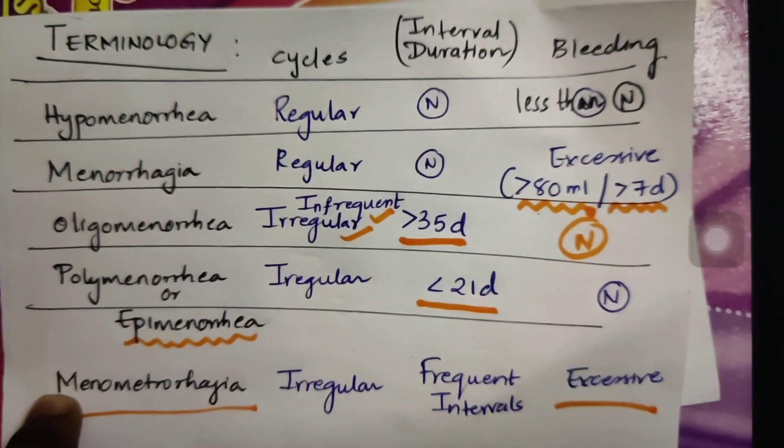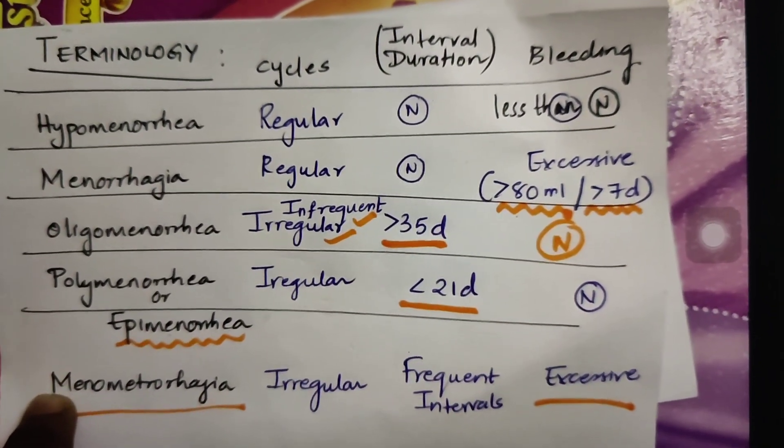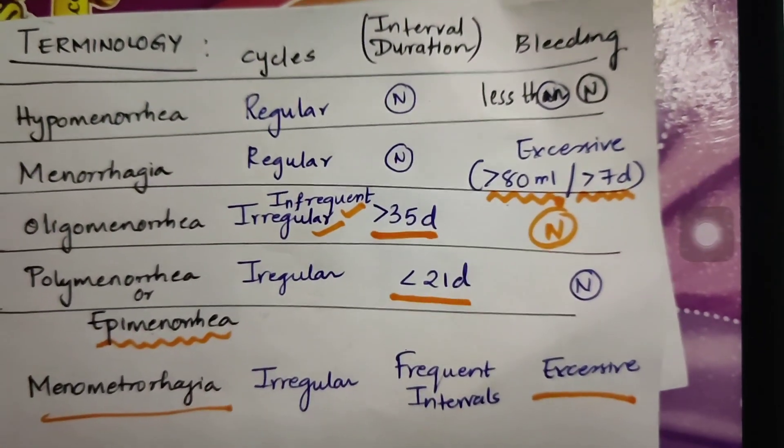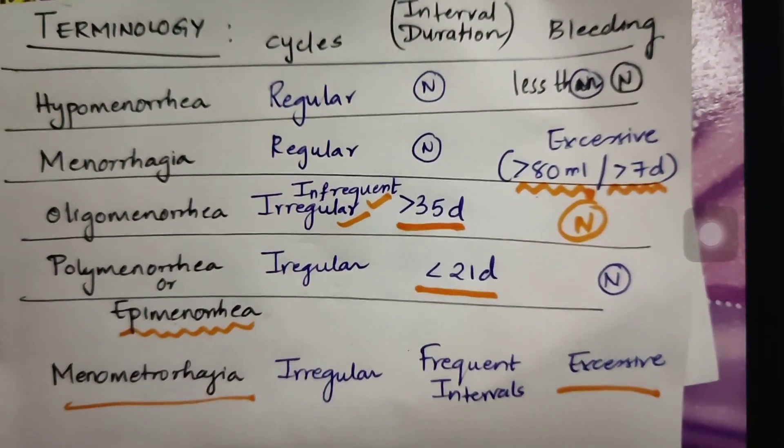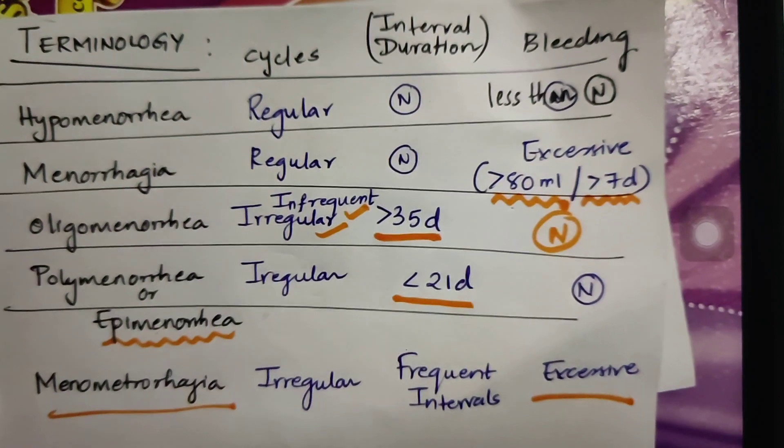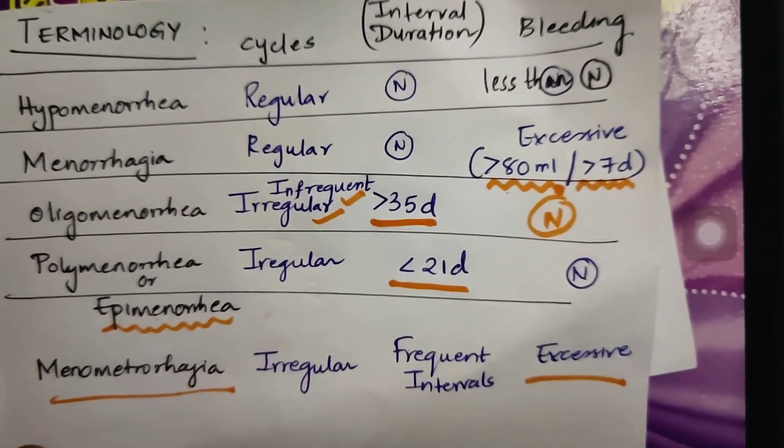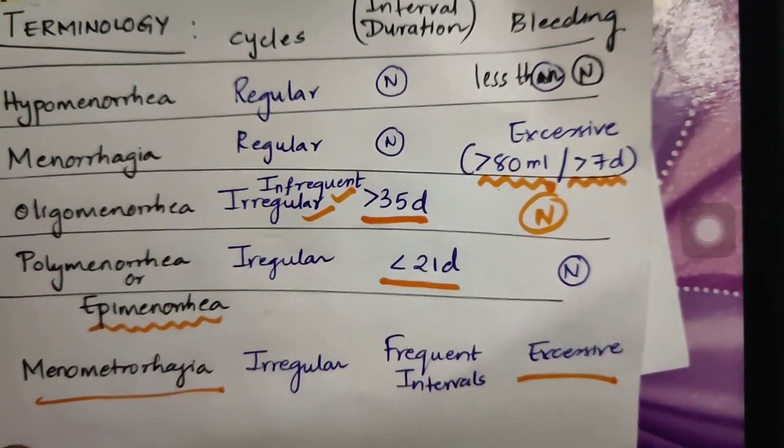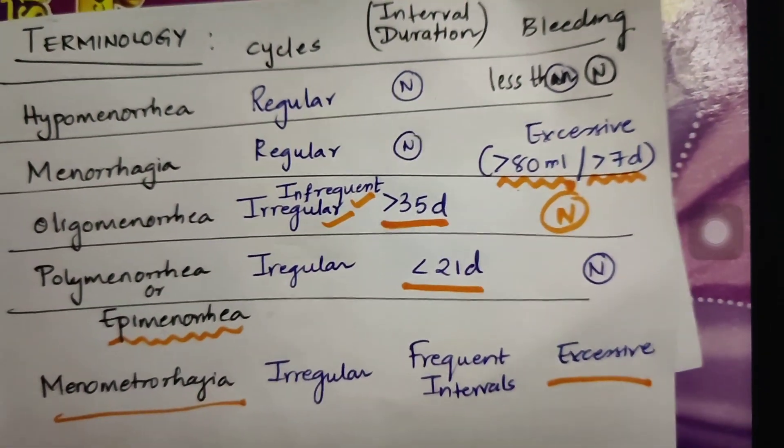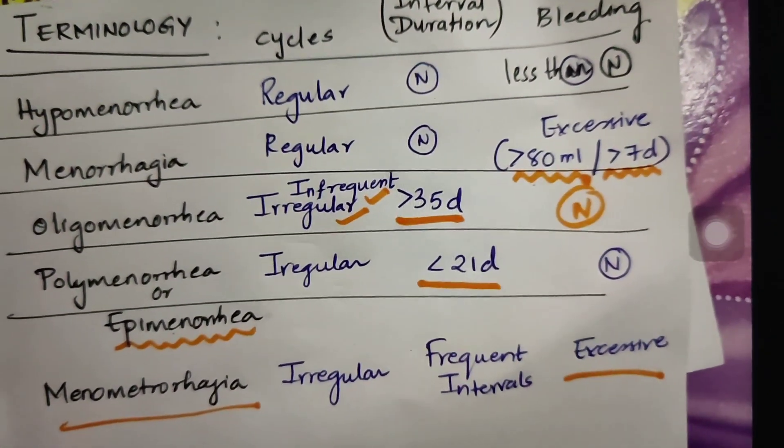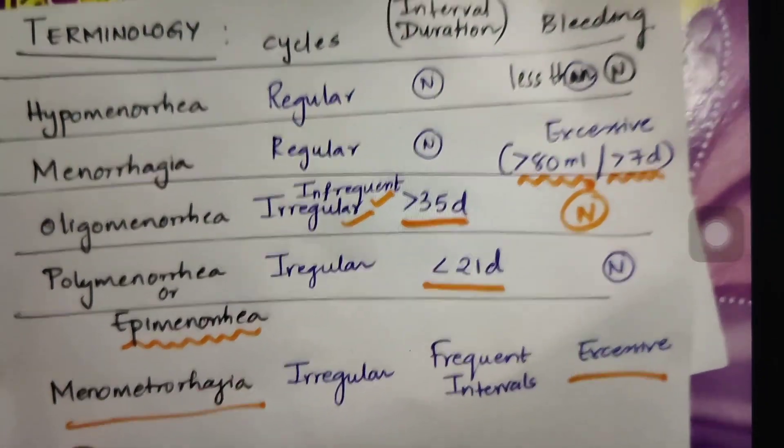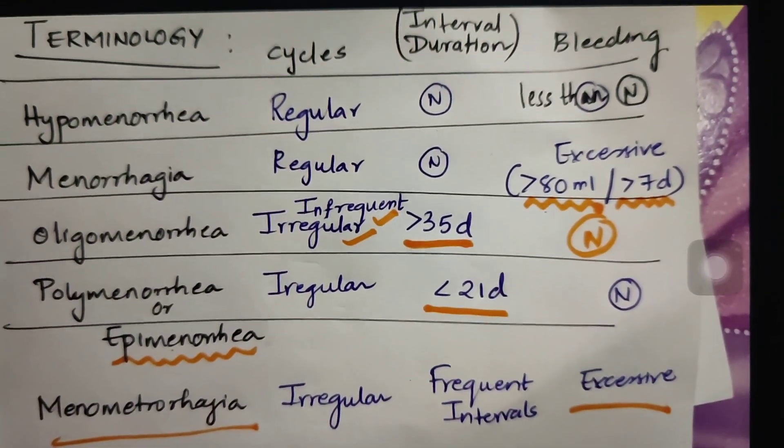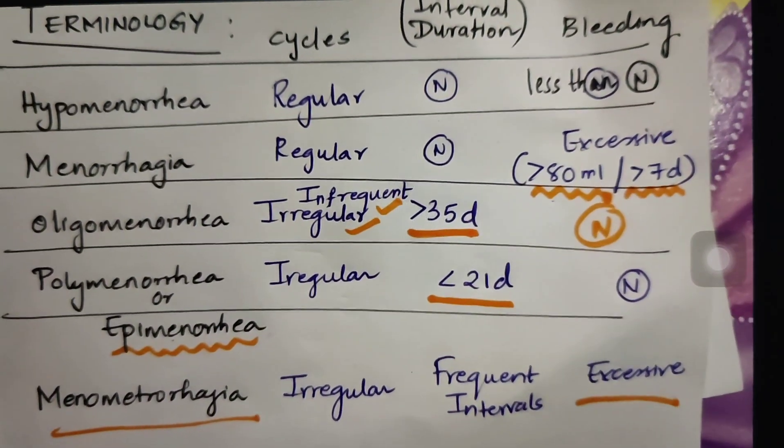Coming to hypomenorrhea, the cycles are regular here and the duration or interval between two cycles is also normal, but the problem is with the amount of bleeding during menstruation, which is less than the normal menstruating female. Whereas menorrhagia is exactly opposite, where the bleeding is excessive. Here you need to know the value: greater than 80 ml of blood or greater than 7 days duration. Sometimes they might ask you these numericals. Oligomenorrhea: the cycles are irregular, infrequent, and the interval between two cycles is greater than 35 days, whereas the amount of bleeding is normal. In polymenorrhea, which is otherwise called epimenorrhea...